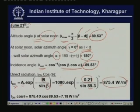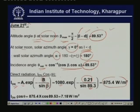We then find the direct radiation on the vertical surface by multiplying I_DN by cos(theta), where theta is 89.53 degrees. I_DN × cos(theta) works out to be 7.18 W/m².